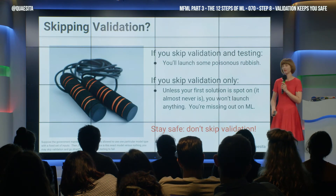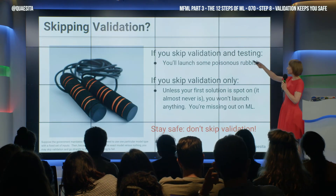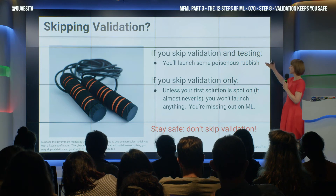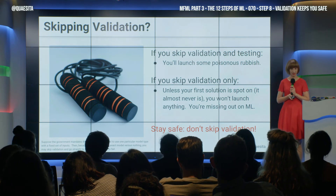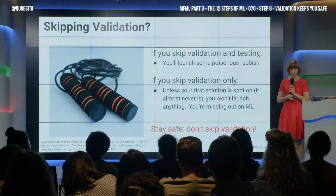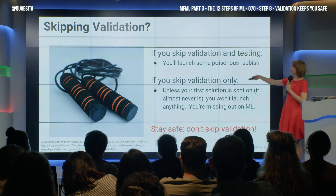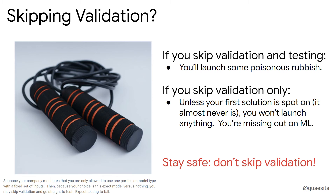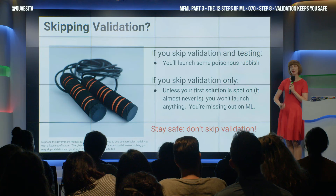So skipping validation — let's see. If you skip both validation and testing, the result is that you will launch some poisonous rubbish. That is bad, very bad, don't do that. If you only skip validation and you do have testing, unless you are solving a really easy problem and your first solution just so happens to be a great solution, all you will find out is that it doesn't work. You have no more ability to do any refinement — pens down, no machine learning for you — so you end up going home empty-handed. That's a bit sad.